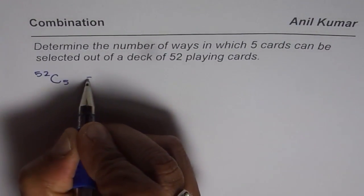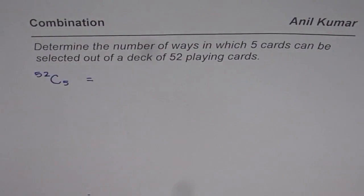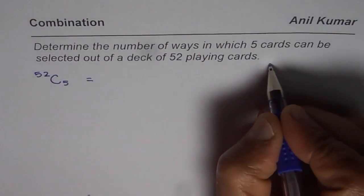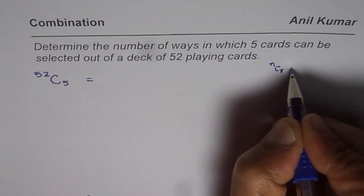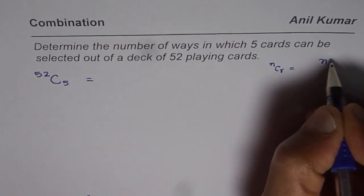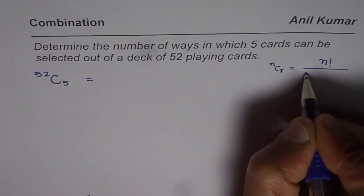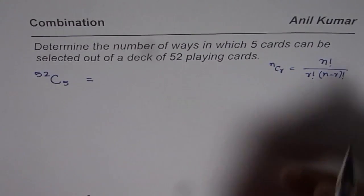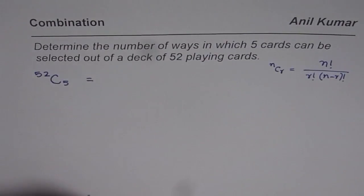Now how to calculate 52C5. There are a number of ways to do it. First we can apply the formula NCR is equals to N factorial divided by R factorial times N minus R factorial. So let's apply this formula and calculate.